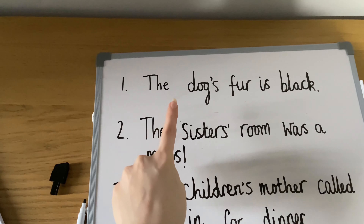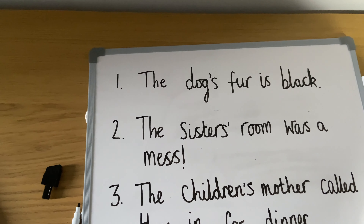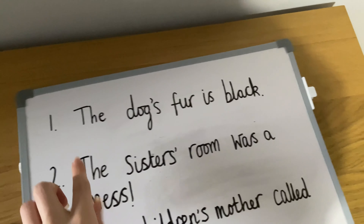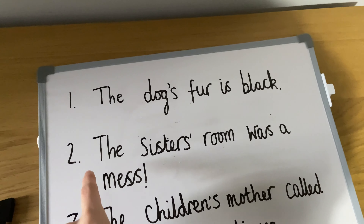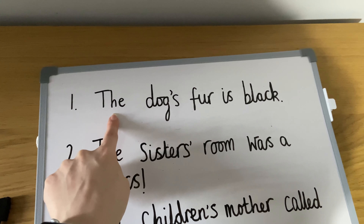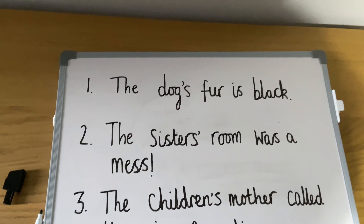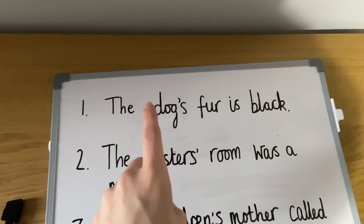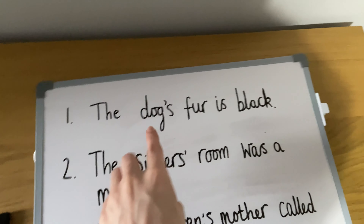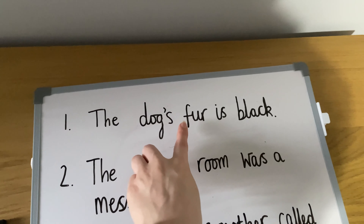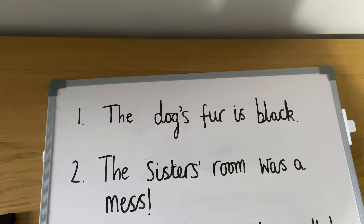So let's review quickly. In a singular noun sentence, without our apostrophe s it reads: the dog fur is black. To show that the black fur belongs to the dog, we need to add an apostrophe s. There's only one dog in this sentence, so that's all we need to do.